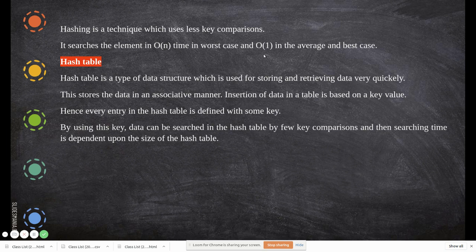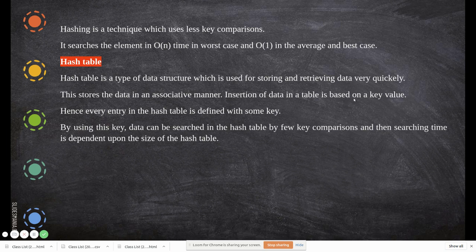When you search, you will get the result immediately — that is the meaning of O(1). To achieve this, we store the data in a structure called a hash table. A hash table is a type of data structure used for storing and retrieving data very quickly. It stores data in an associative manner, and insertion of data in the table is based on a key value. For example, you can store people living in a city using their phone number as the key.